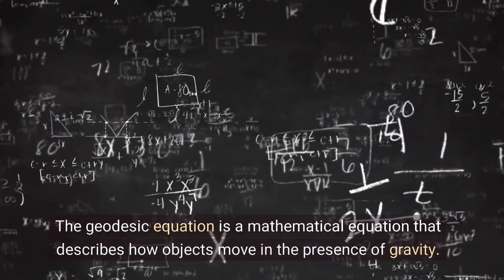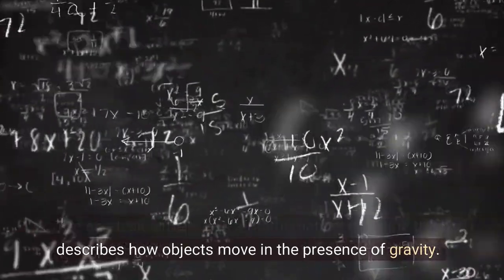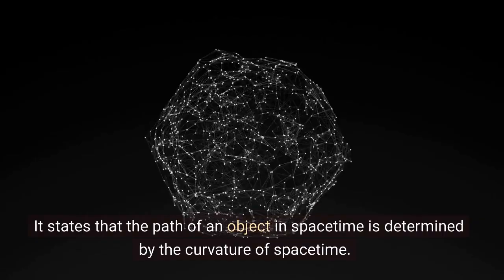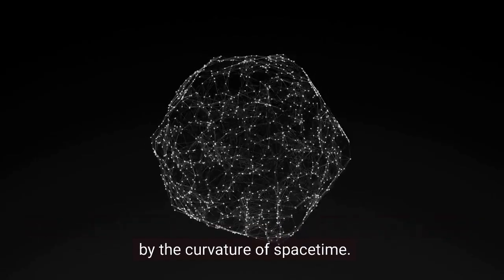The geodesic equation is a mathematical equation that describes how objects move in the presence of gravity. It states that the path of an object in spacetime is determined by the curvature of spacetime.